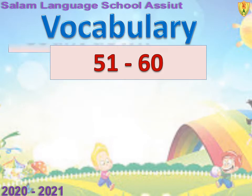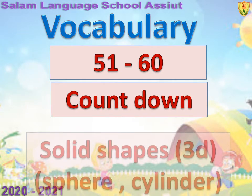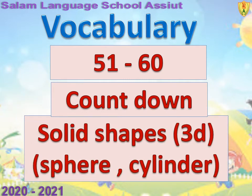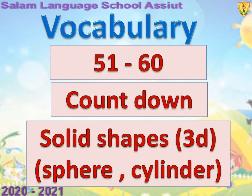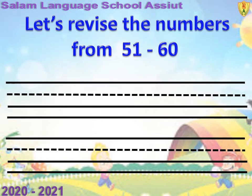Countdown. Solid shapes. Three dimensional shapes. Sphere. Slender. Let's revise the numbers from 51 to 60. Let's see.